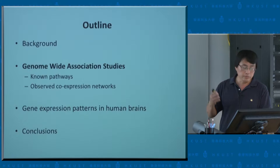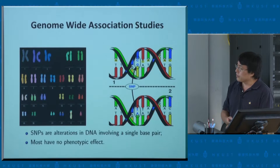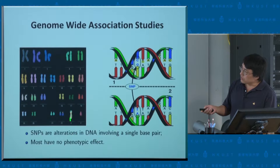The first major topic is the application of Markov random fields to genome-wide association studies. First I'll give a very brief overview of what genome-wide association studies are. This is the karyotype of our genomes — 23 pairs of chromosomes, 22 pairs of autosomes and one sex chromosome. This is X, this is Y, for male. For female, there are two copies of X.